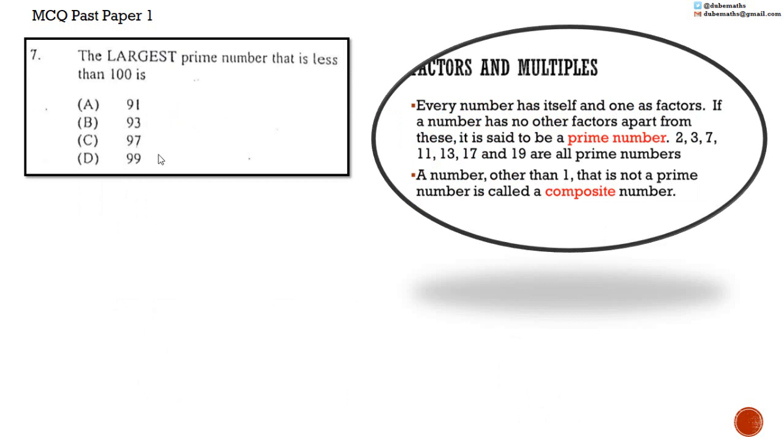Number 7. The largest prime number that is less than 100 is A, 91, B, 93, C, 97, or D, 99. A prime number has only two factors, one and itself.